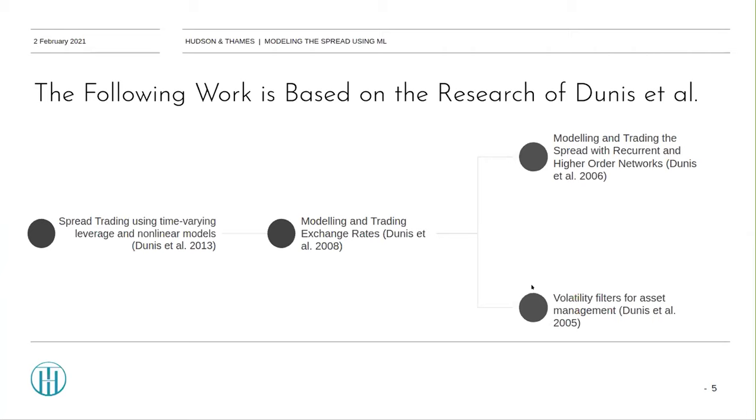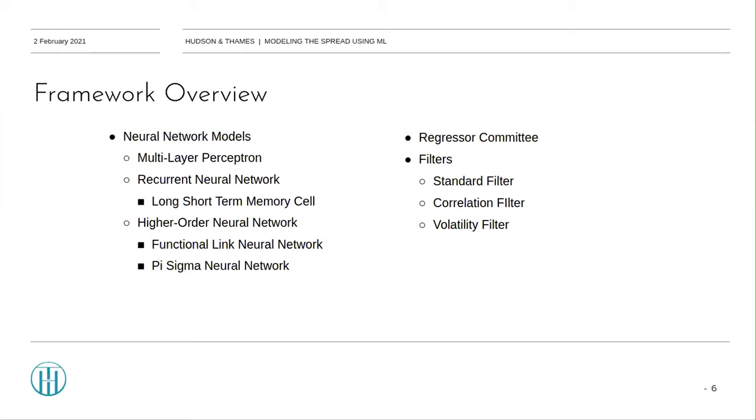Framework overview. Why these neural networks? They were selected to evaluate the performance of increasingly complex network architectures against the classical fair value benchmark. Why use a regressor committee to tackle the variance bias problem? As Naftali in his 1997 paper notes, an ensemble of models performs better than any individual model because the model's various errors will average out.